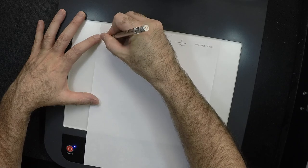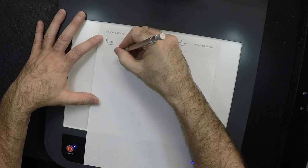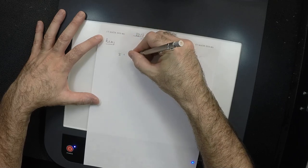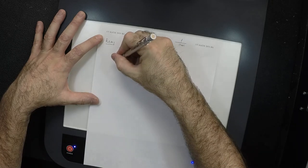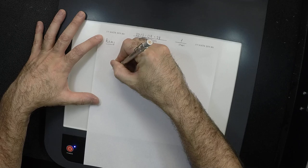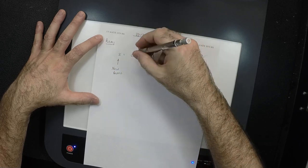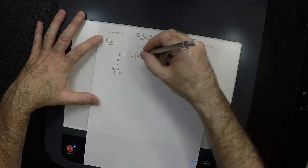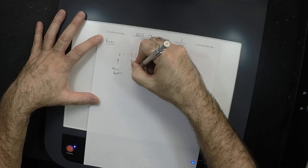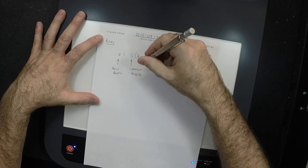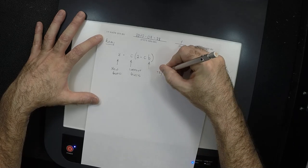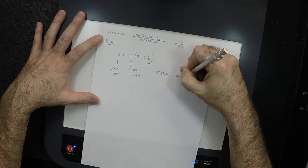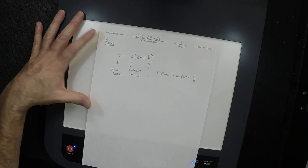Does anyone remember what the Newton-Raphson division formula is? Because I can't remember it — I derive it every time. The formula is: X equals C times (2 minus C times B), where C is the current guess, and B is what we're trying to reciprocate. So you're trying to compute 1 over B.